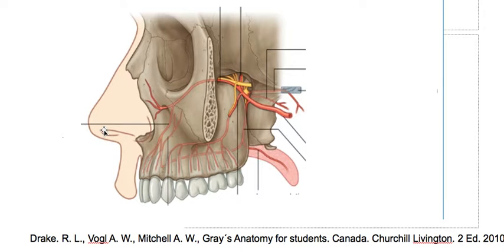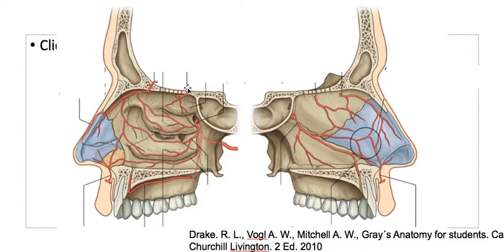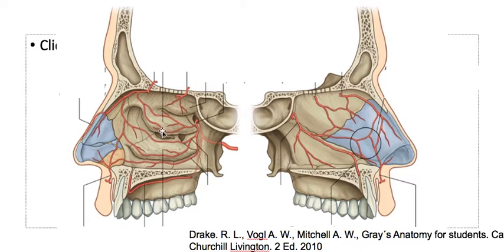Then we also have irrigation from the ethmoidal arteries. Here we have the anterior and posterior ethmoidal arteries, which are branches of the ophthalmic artery, which in turn branches from the internal carotid artery. The anterior ethmoidal artery has a terminal branch that passes between the bone and cartilage and supplies just the skin around the tip of the nose. The anterior and posterior ethmoidal arteries anastomose here and will anastomose with the external branch of the sphenopalatine artery.